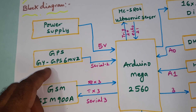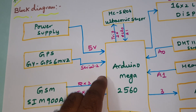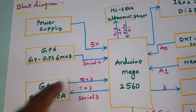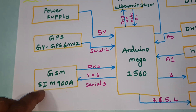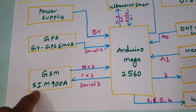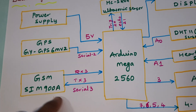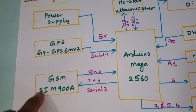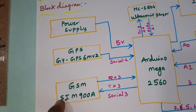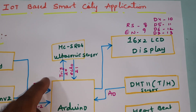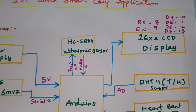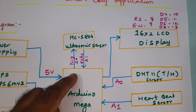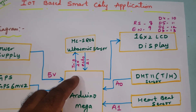We are using a GPS GY6M V2 GPS module connected to the serial communication tool GSM SIM900A, which sends GPRS internet as well as SMS alerts to a particular mobile number. An HC-SR04 ultrasonic distance measurement module is used to measure the garbage level of the bin.